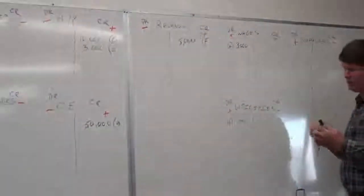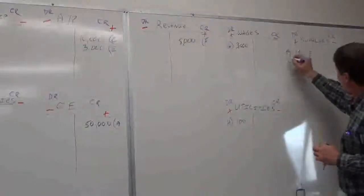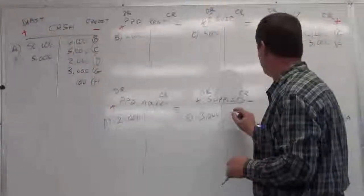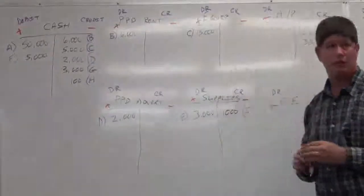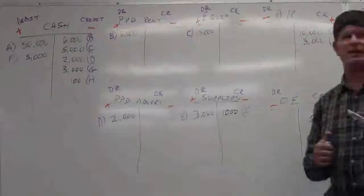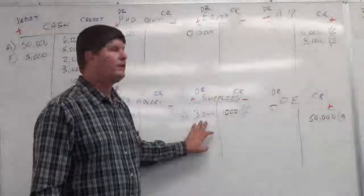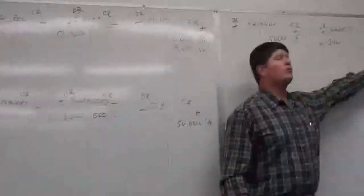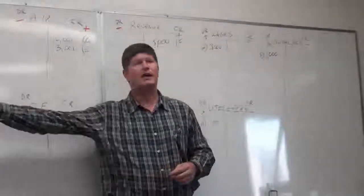We paid for some supplies, or rather we used them up. Supplies expense increases on the debit side — transaction I. And we had to reduce the balance in our supplies asset account, so that's a credit. We had supplies in the closet that we bought earlier, and we used some of them up. So we took the asset, took out what we used, and recorded that as an expense because we've consumed them — and we have less left in the supply closet.